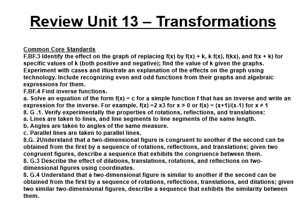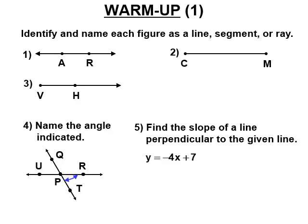Welcome to the review for transformations. We began this unit before spring break with some basic lessons about how to name lines and angles. That's a line — you know it's a line because it has arrows on both ends. Lines go on forever. This is line A-R, or you could call it line R-A. The naming of a line doesn't tell you where the letters are along a line.